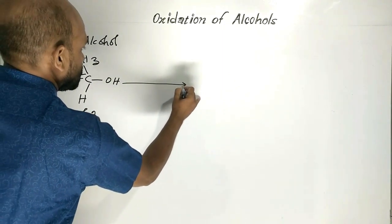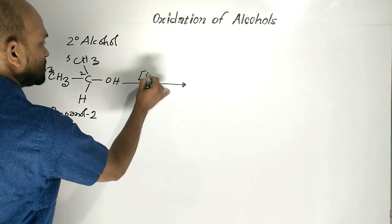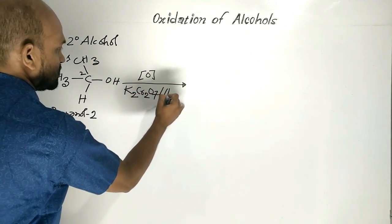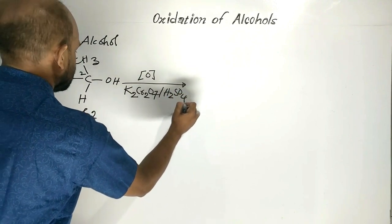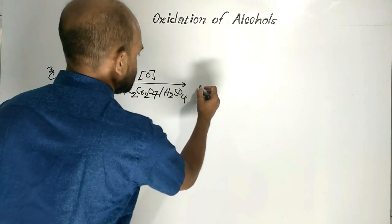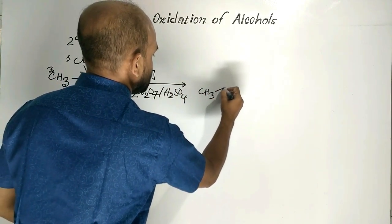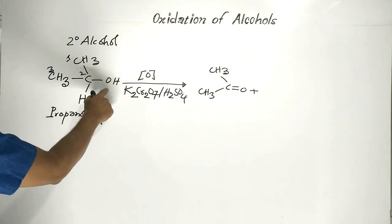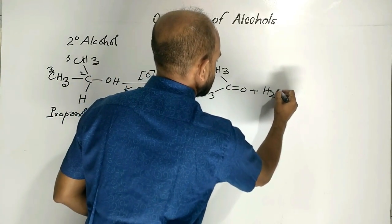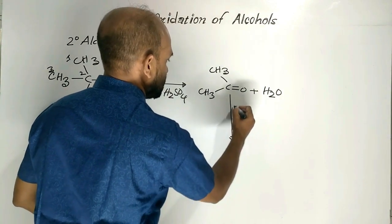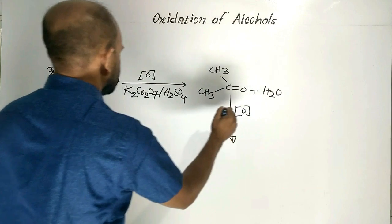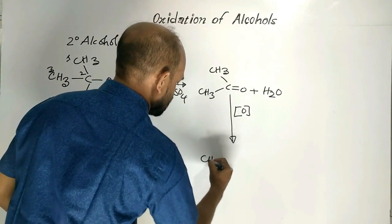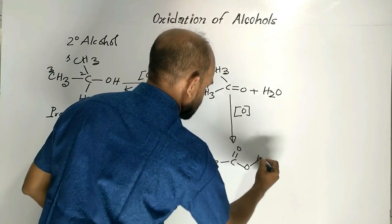Propanol-2. When propanol-2 is oxidized with acidic potassium dichromate, 2 degree alcohol changes to ketone. By-product is water. Now this ketone is oxidized with the same oxidant, and the ketone converts to acetic acid.